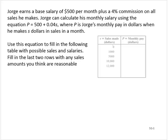So for example, if George makes $0 in sales, then his pay for that month would be 500 plus 0.04 times 0. And following our order of operations agreement, that would be 500 plus 0, which is 500. So if he makes $0 in sales, his monthly pay would be $500.